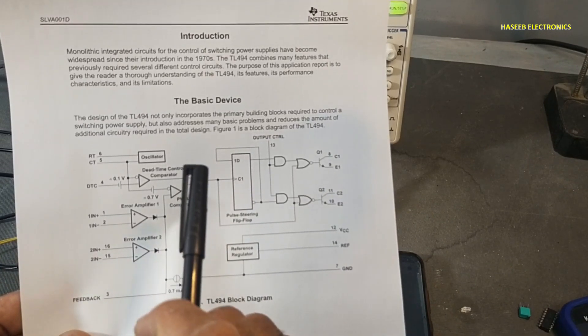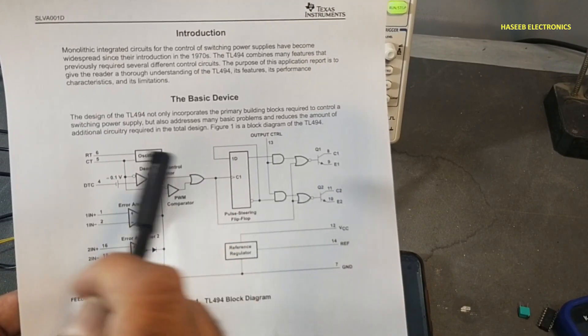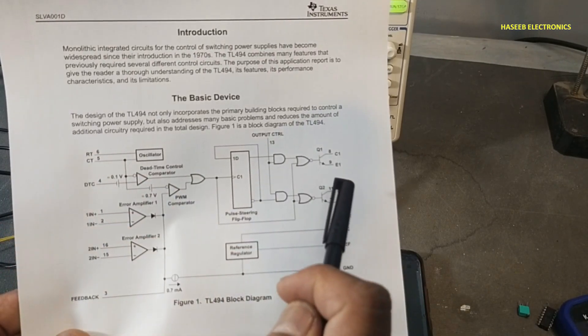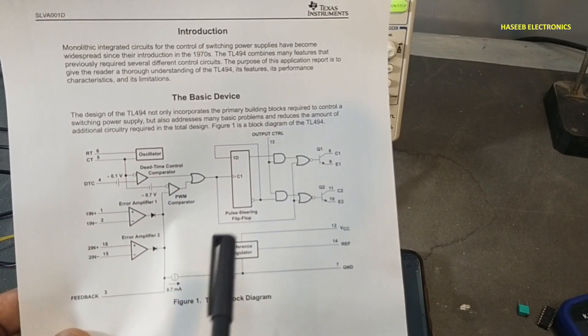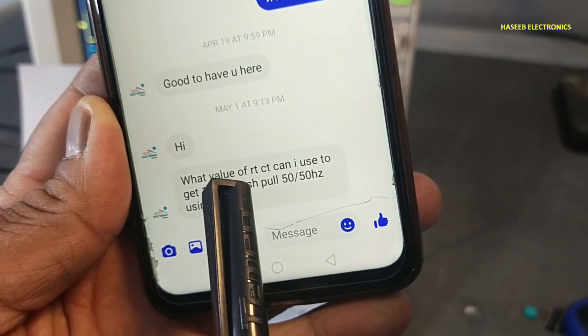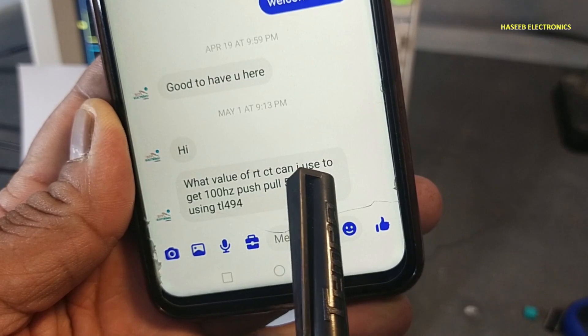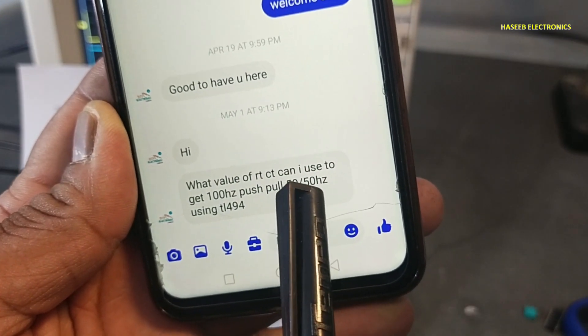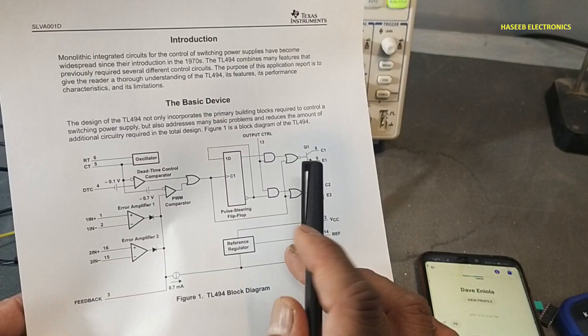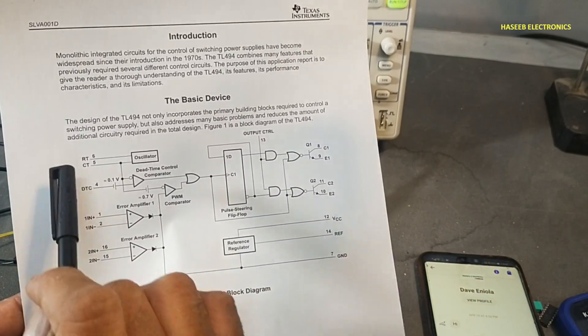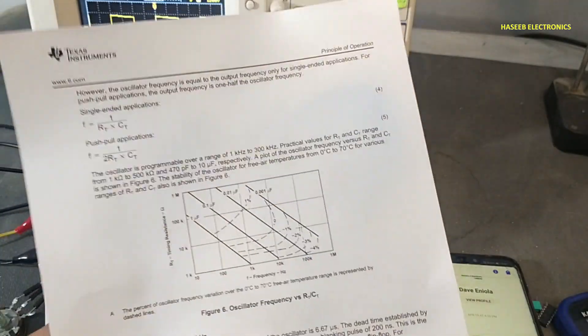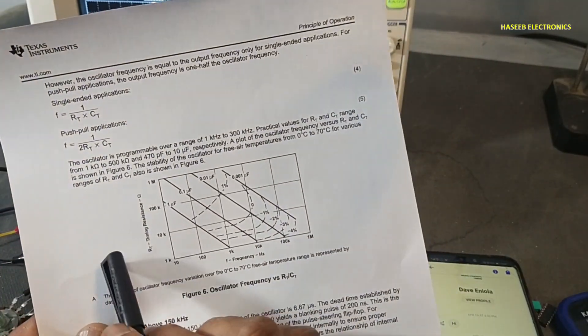When we are using push-pull, oscillator frequency will be divided by two at output stage. It is a question from my viewer: what value of rtct can I use to get 100 hertz push-pull, 50-50 hertz using TL494? He needs 50 hertz here, 50 hertz here, so we need 100 hertz.